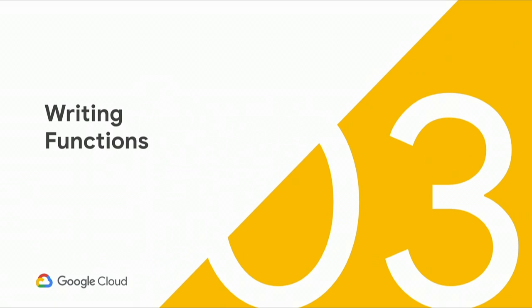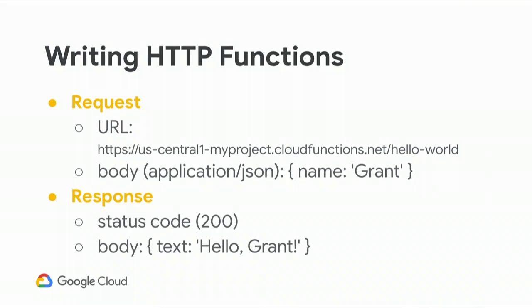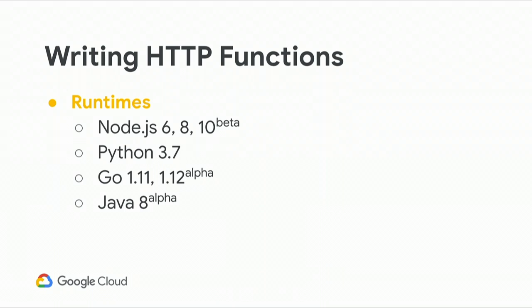For writing functions in Google Cloud Functions, you can specify a request URL and provide a body — for example, JSON with a name like 'grant'. In the response you'll get a 200 OK and maybe a response body of 'hello grant'. Cloud Functions supports Node 6, 8, and 10, Python 3.7, Go 1.11 and 1.12 alpha, as well as Java 8.